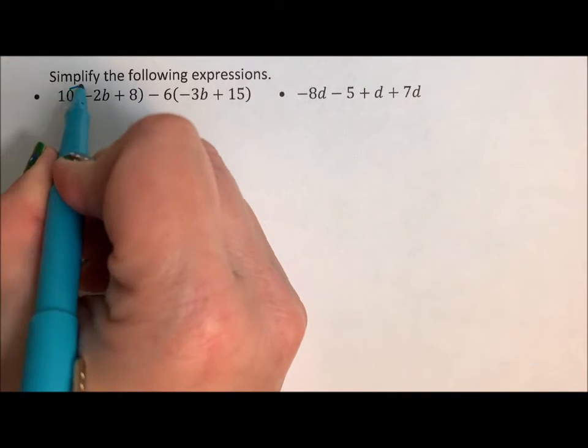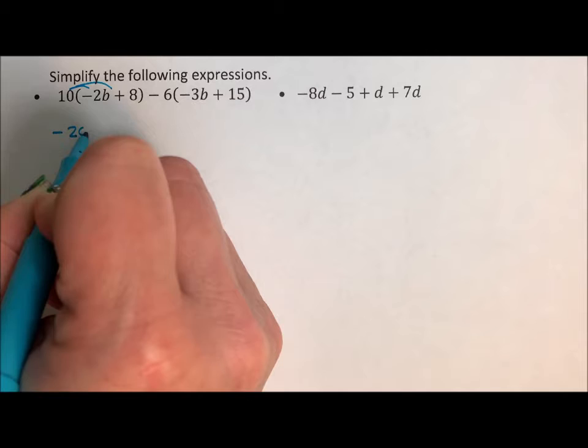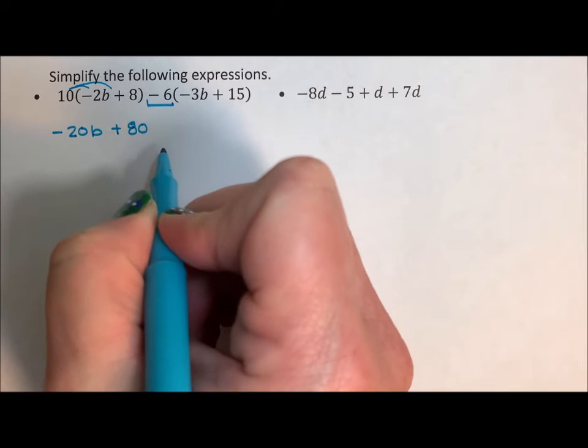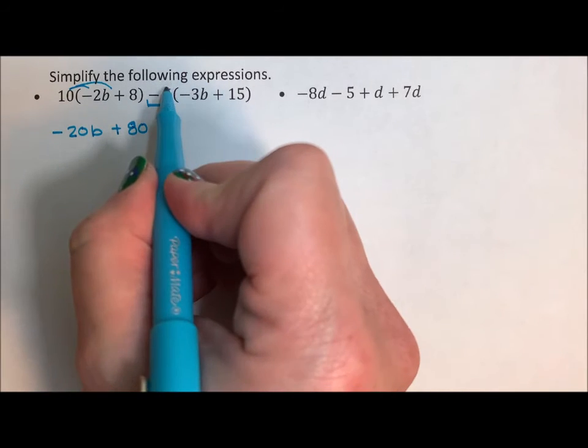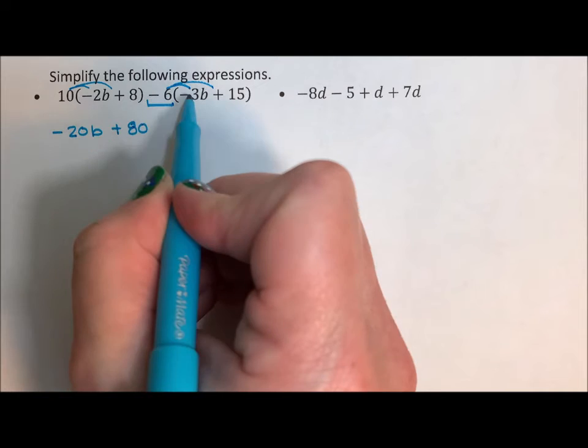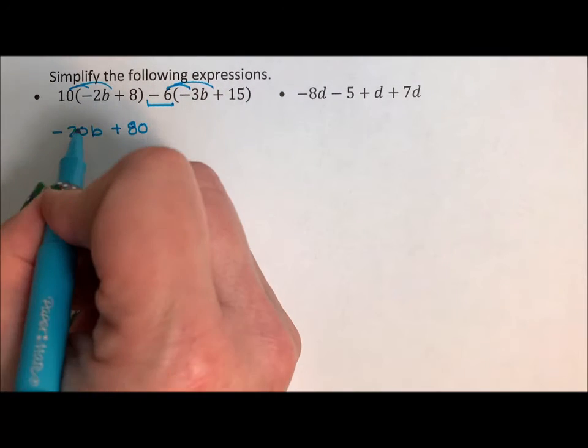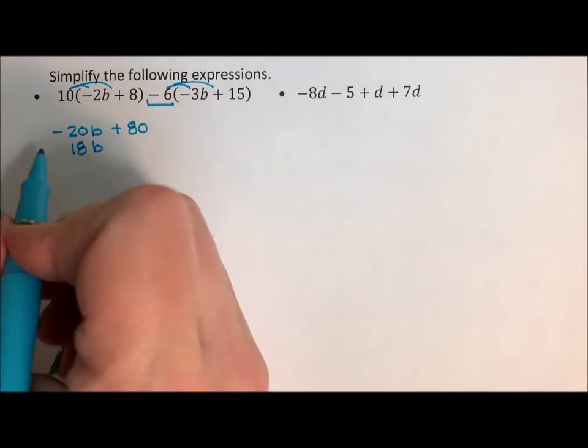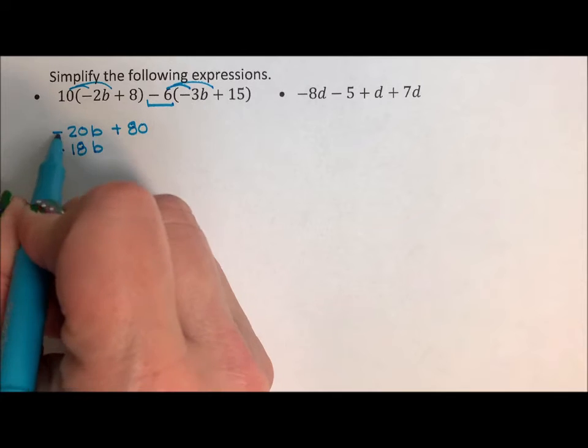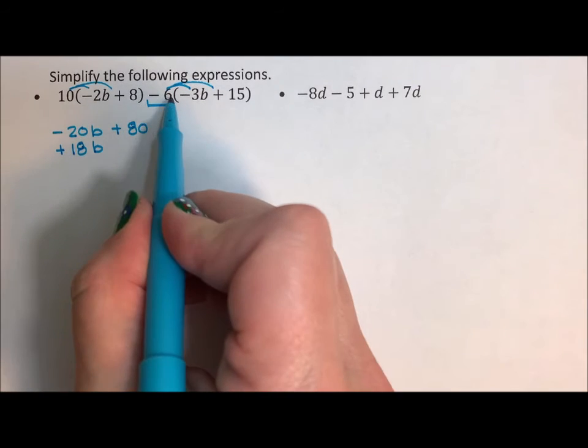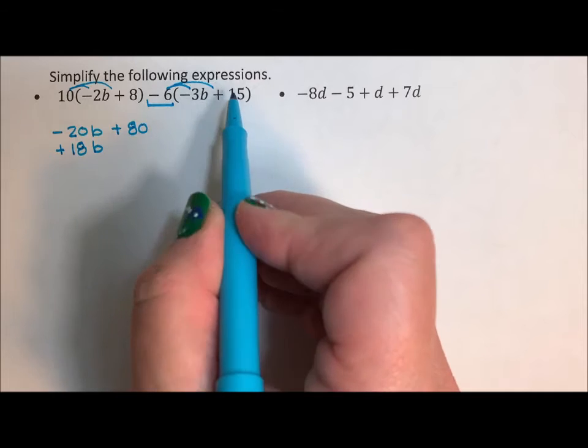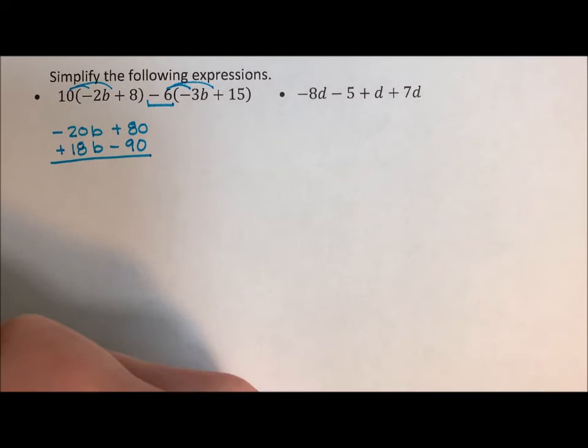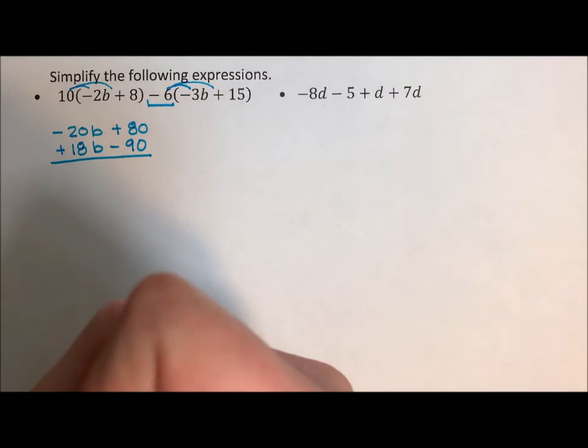So I'm going to distribute this 10 in and I'm going to get negative 20b plus 80. Now this is not a 6 that I'm distributing in, but a negative 6. When I distribute negative 6 times negative 3, it becomes a positive 18. I'm going to write that 18b under the negative 20b, stacking my like terms, and it's a positive. That allows me to see that they have different signs. Negative 6 times positive 15 becomes negative 90. I'm going to put that under the 80. Again, noting that they have different signs, everything here ends up being subtraction.